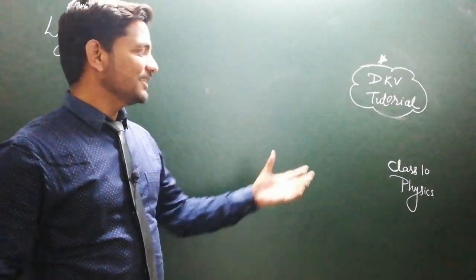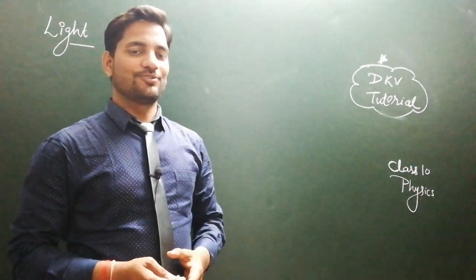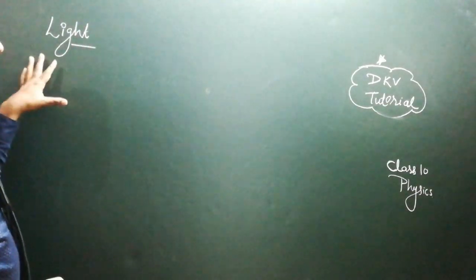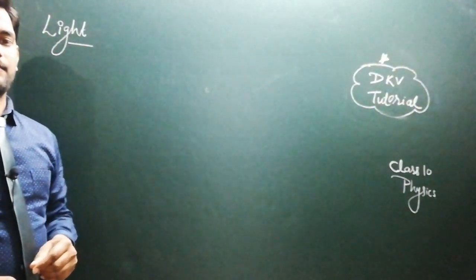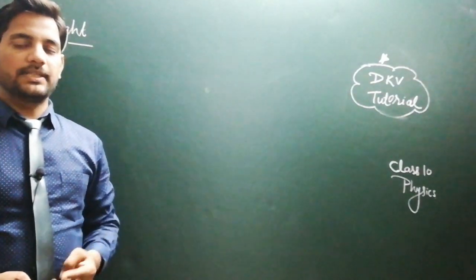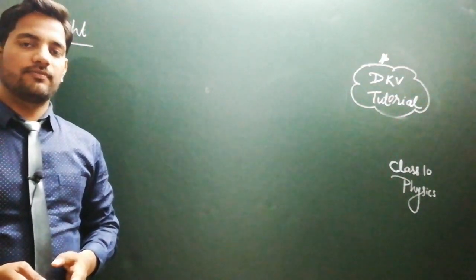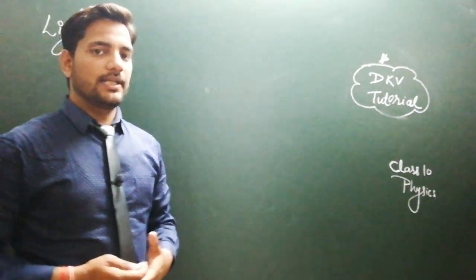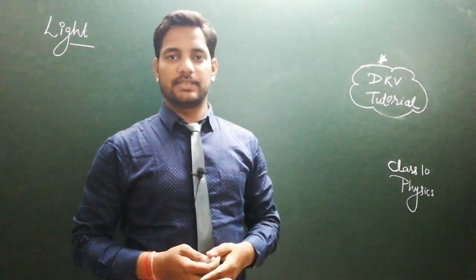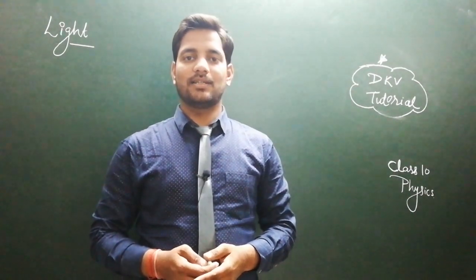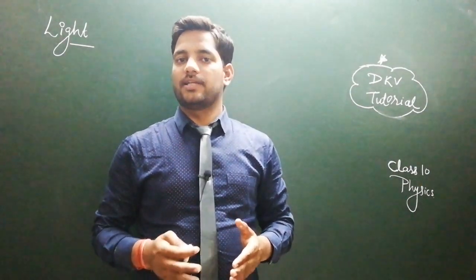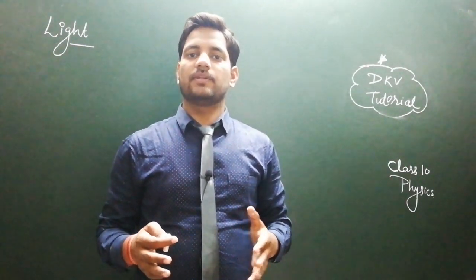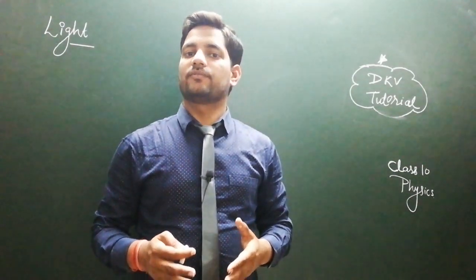Hello dear students, welcome to DKB Tutorial. Today I am going to start a new chapter of class 10 physics — that is Light. In this chapter I am going to talk about two topics: the first topic is the reflection of light, and the second topic is the refraction of light. Light is very important in our life; we can see objects only because of light.